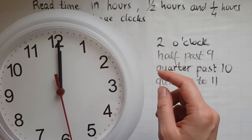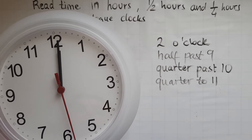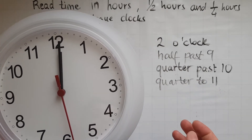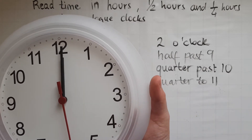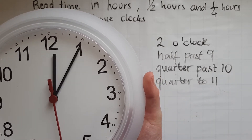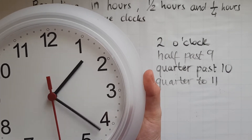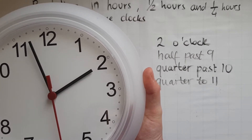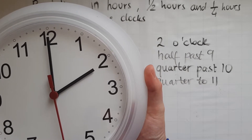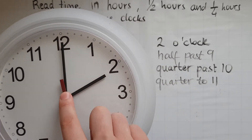So two o'clock — that means it's exactly two o'clock, just hours, no minutes. The hours hand goes to two. I will take the hours hand to two. There we go — two o'clock.